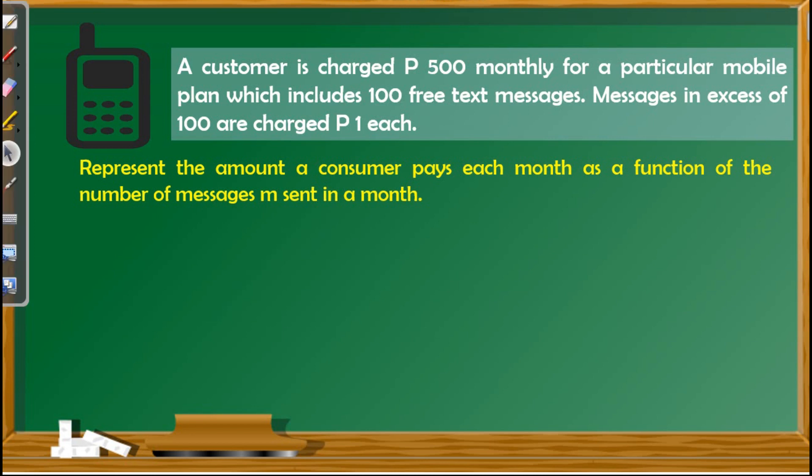Let us have examples. First problem: a customer is charged P500 monthly for a particular mobile plan which includes 100 free text messages. Messages in excess of 100 are charged P1 each. Represent the amount a consumer pays each month as a function of the number of messages M sent in a month. As we can see in this situation, there are two variables: the independent variable refers to the number of messages sent in a month, while the dependent variable is the amount a consumer pays each month.